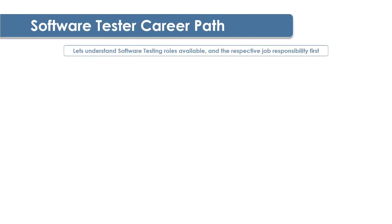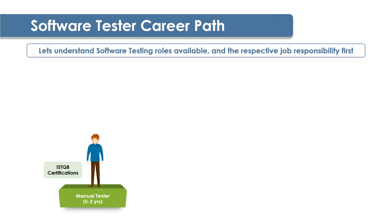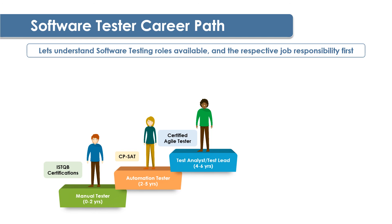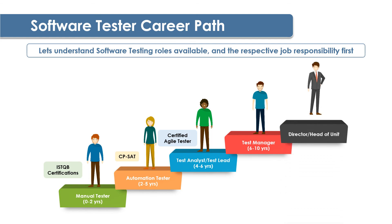In today's dynamic IT industry, it's very difficult to figure out where you'll be in the next 5 to 10 years. Let's quickly understand the software testing roles available and their respective job responsibilities. If you start your career in manual testing, you will initially start as a manual tester, then move on to automation tester as your experience grows. From there you can progress to test analyst or test lead, then test manager, and finally the topmost level — director or head of unit.